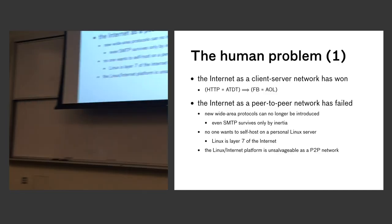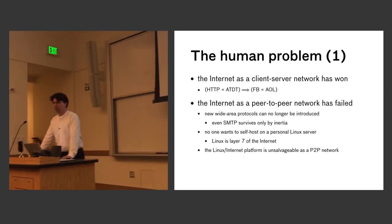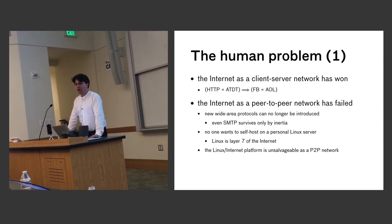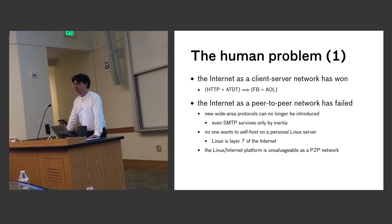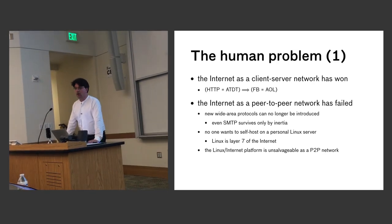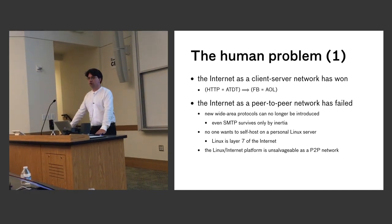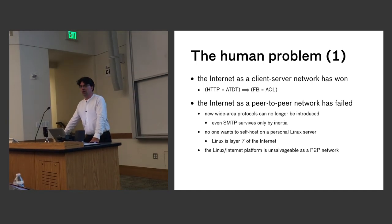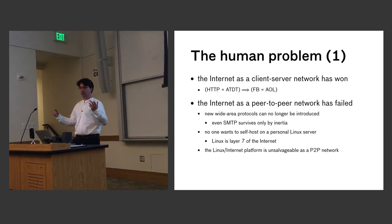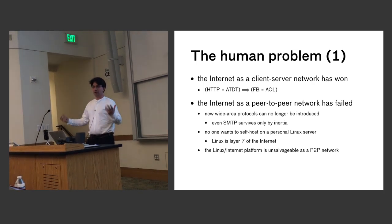Let's switch gears and talk about the human need this system is solving. We have a little problem: the internet actually failed. It succeeded well as a digital modem — it's entirely a client-server environment, not a peer-to-peer network. The dream of the internet from the 80s and 90s was that everyone would have their own server, and things we do on Facebook today would be done by protocols like SMTP.